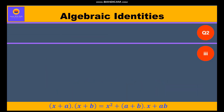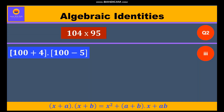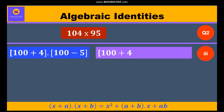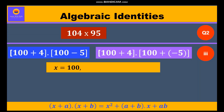Now the third question: 104 into 95. Here, 104 can be written as 100 plus 4 and 95 as 100 minus 5. Taking the minus sign inside, we write it as 100 plus 4 into 100 plus (minus 5). So x = 100, a = 4, b = minus 5. We substitute these values in identity 5.